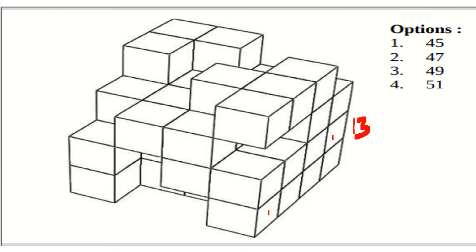Moving from right to left: again four, four, four, four — so four plus four is eight, plus two is ten, plus three is thirty. Next layer: the bottom one is missing, so out of four only three here, then four, then four, then one. Adding: one plus four is five, plus four is nine, plus three is twelve — so twelve cubes in this layer.